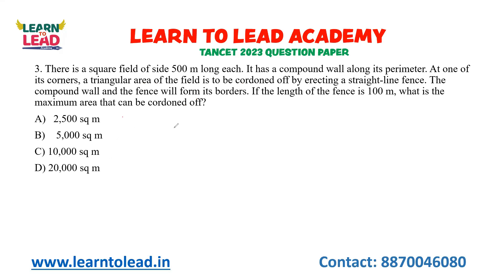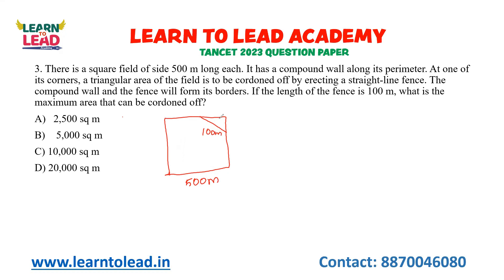There is a square field of side 500 meters. It has a compound wall along its perimeter. At one of its corners, a triangular area of the field is to be cordoned off by erecting a straight-line fence. The compound wall and the fence will form its borders. If the length of the fence is 100 meters, what is the maximum area that can be cordoned off? Let us take the two sides as A, and the 100-meter fence forms the hypotenuse.